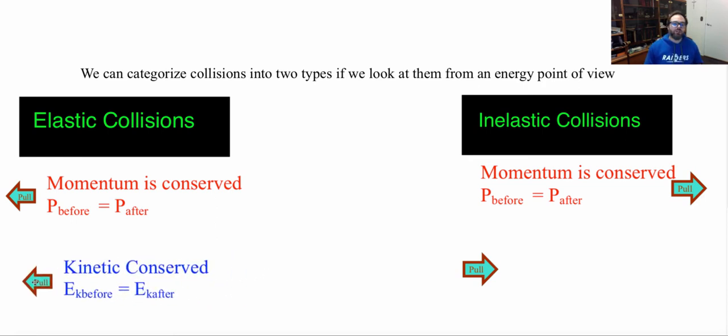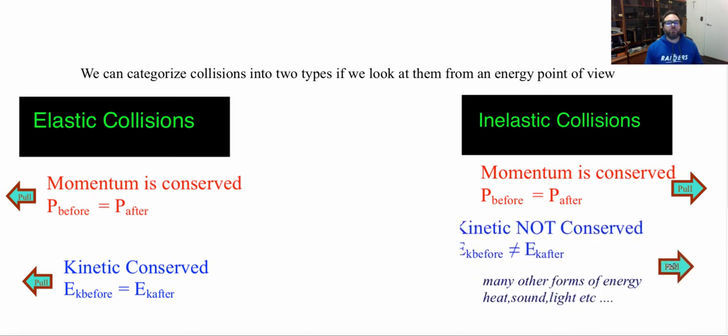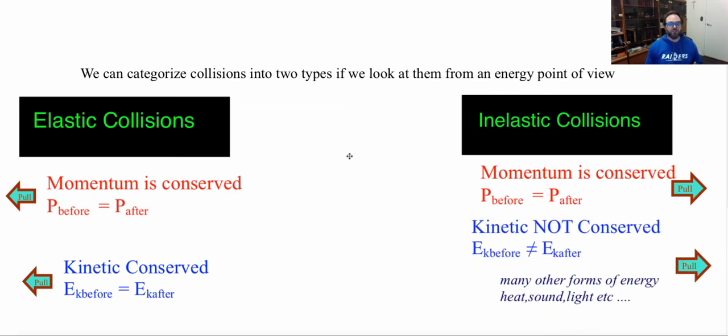An elastic collision is where kinetic energy is conserved, meaning the kinetic energy before is equal to the kinetic energy after. An inelastic collision is when kinetic energy is not conserved, meaning the kinetic energy before is not equal to the kinetic energy afterwards. So some of our energy got lost in either heat, friction, or some other type of light or sound energy.